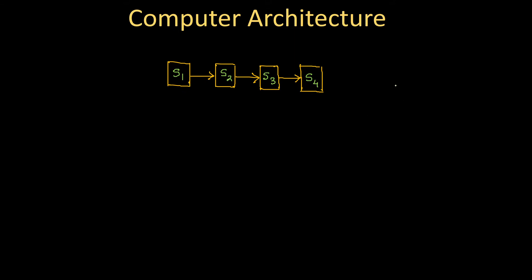Because of this assumption — that every stage has a unique responsibility — this type of pipeline is called a static pipeline. 'Static' means fixed: the functionality of the stages is fixed, and it is defined that the instruction will go through stage one first, then stage two, then stage three, then stage four and come out of the pipeline. The connection of the stages is fixed, that's why it is called a static pipeline.